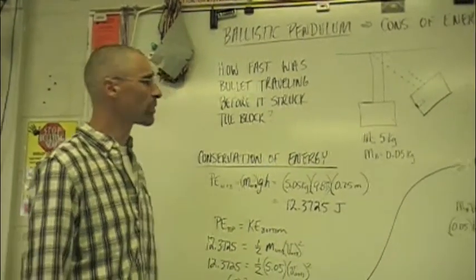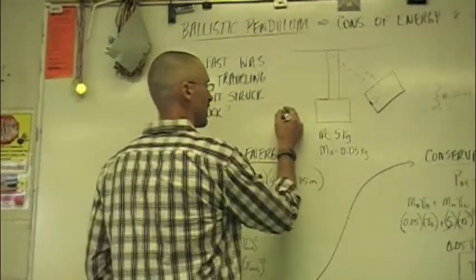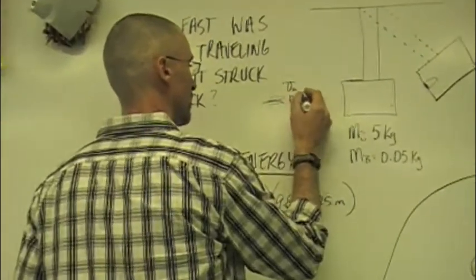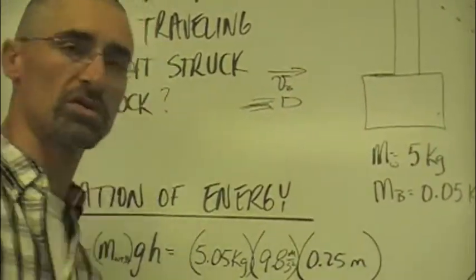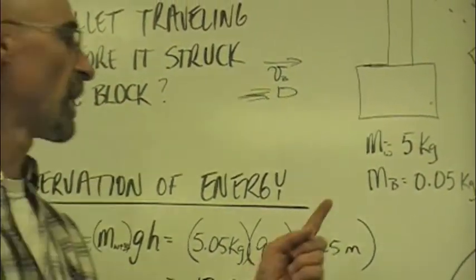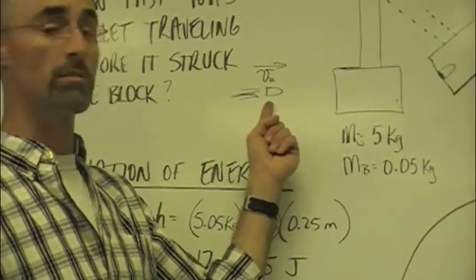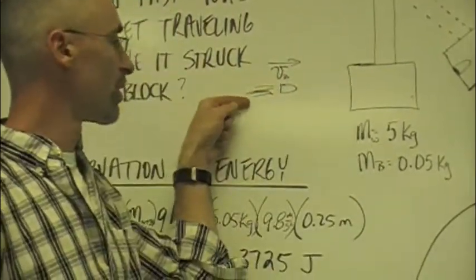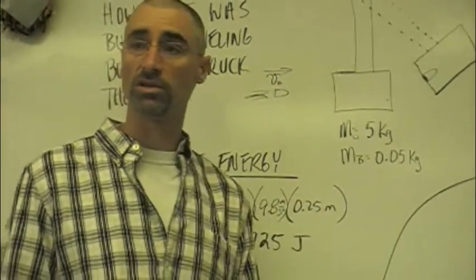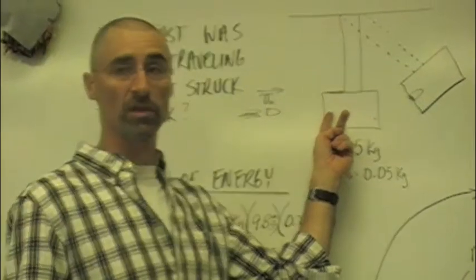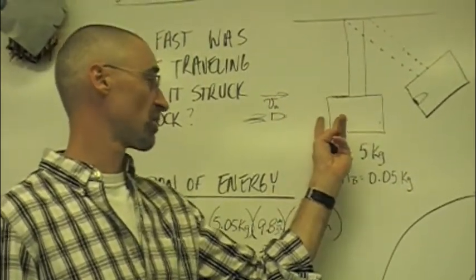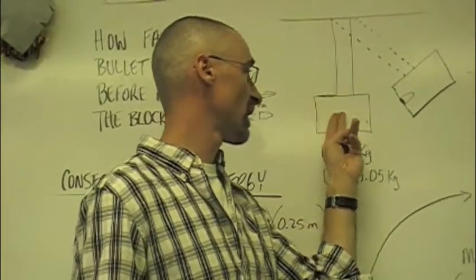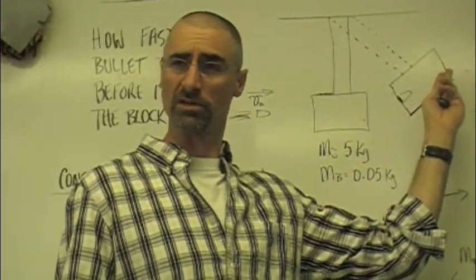So guys, what a ballistic pendulum is, is basically, I forgot to draw the bullet here. We have the bullet coming in at some sort of velocity, flying towards the ballistic pendulum. Okay, the ballistic pendulum, we know its mass, and we know the mass of the bullet. And what the bullet does is we put in a material like clay or something, where the bullet is going to go in and totally lodge into the ballistic pendulum. When it lodges into the ballistic pendulum, we all know that the momentum is going to be conserved, and it's going to give this an initial velocity, now that the bullet's stuck in it, and it's going to swing up to a certain height. Does that make sense?